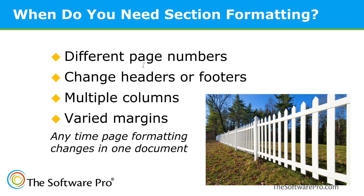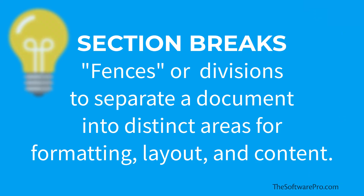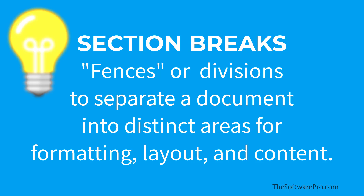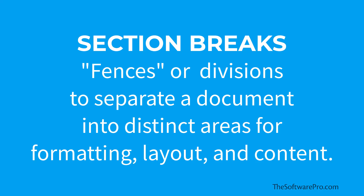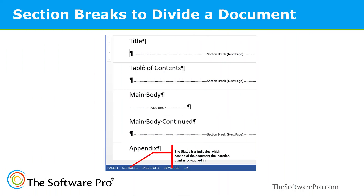One way to think of a section is to compare it to a large piece of undeveloped flat land. Initially it has one set of boundaries with the same look throughout, but you want to divide the land into plots for individual property owners who can develop their areas in any way they want. Each lot is divided with fences and property lines, and in Word those boundaries are called section breaks. That lets us isolate certain parts of a document so that we can have very specific page formatting for those sections.